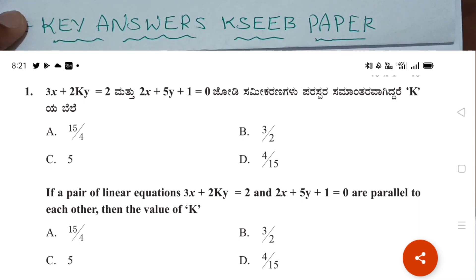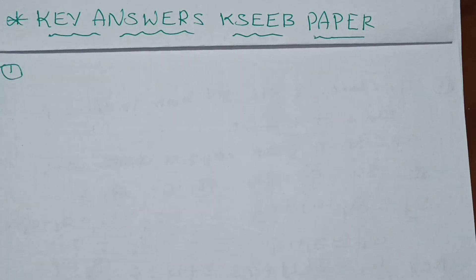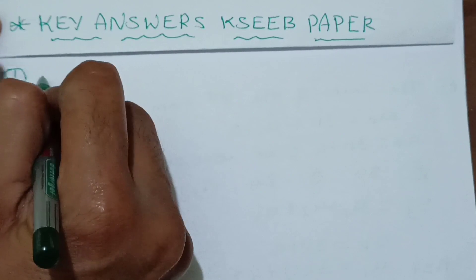This is the first question. You need to find the value of K. That is the condition of K value for parallel lines. This is the condition for parallel. Here is the pair of equations.